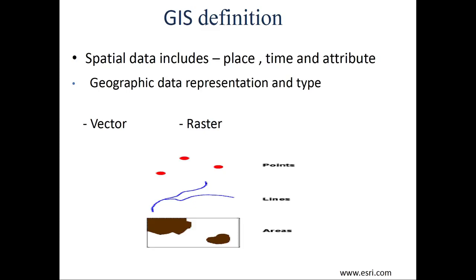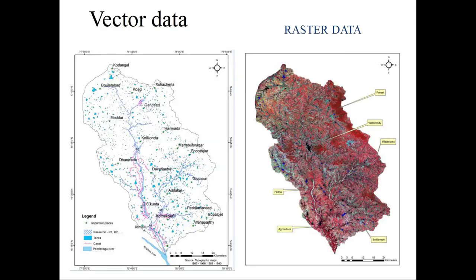Geographic data can be of two formats. One is vector, the other is raster. They can be of different types — for example, points, lines, and areas. We'll go into them separately. Vector data, as you can see, is presented on the right, and vector data is often generated when you digitize a paper map. That's as simple as that.